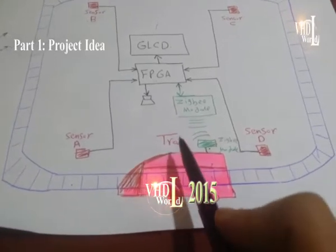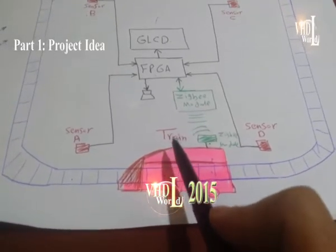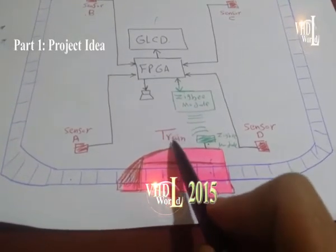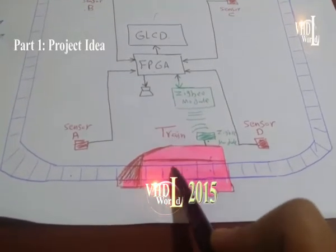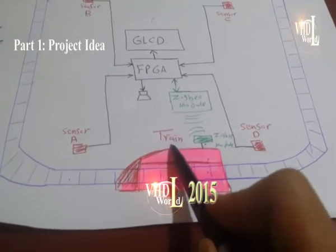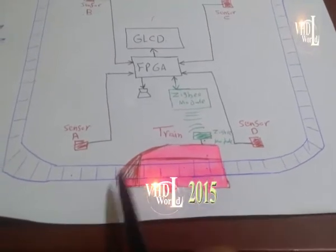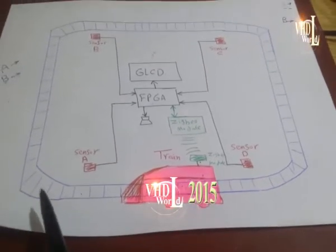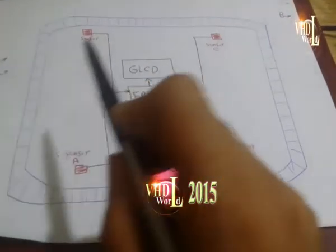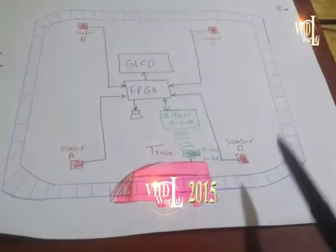Hello, in this new FPGA project, we want to track a train movement on a predefined train rails as shown in this figure.